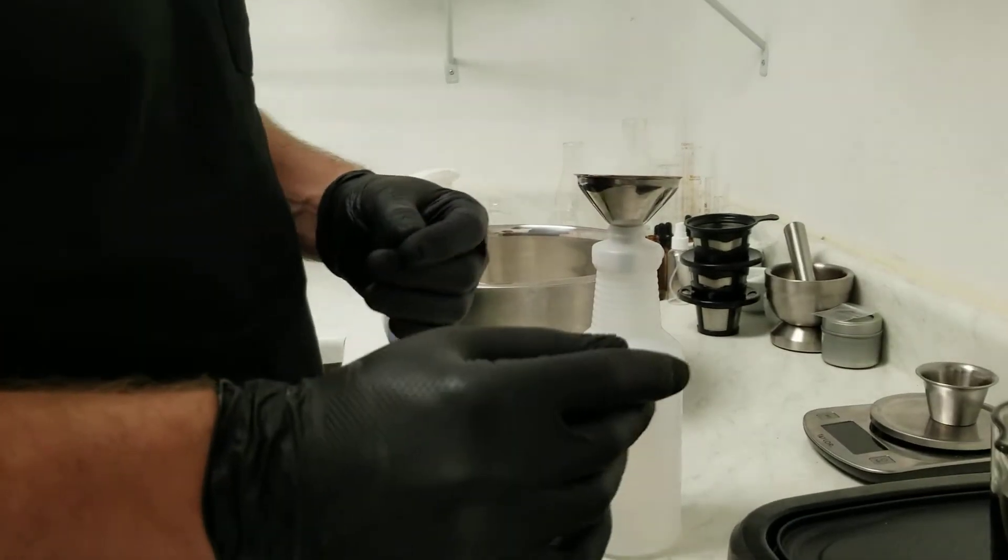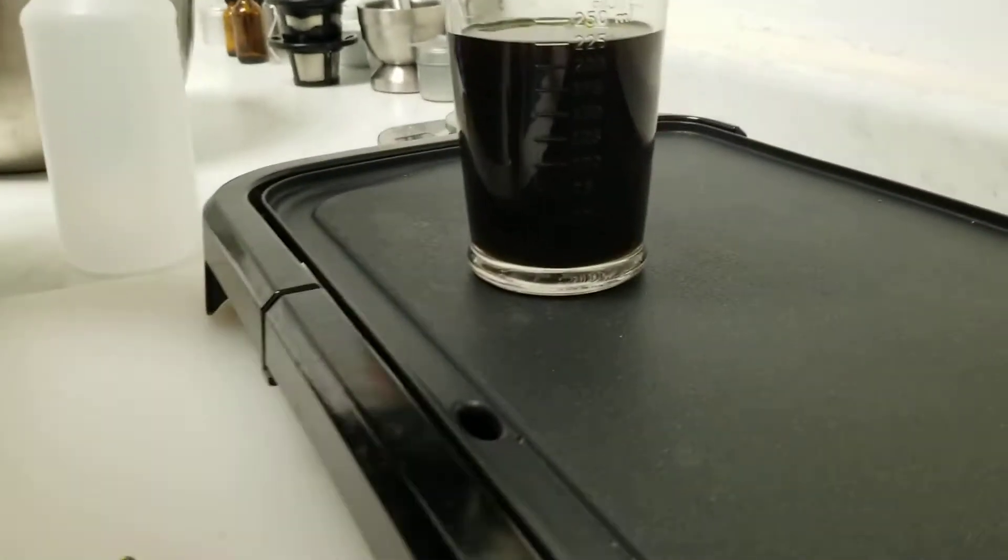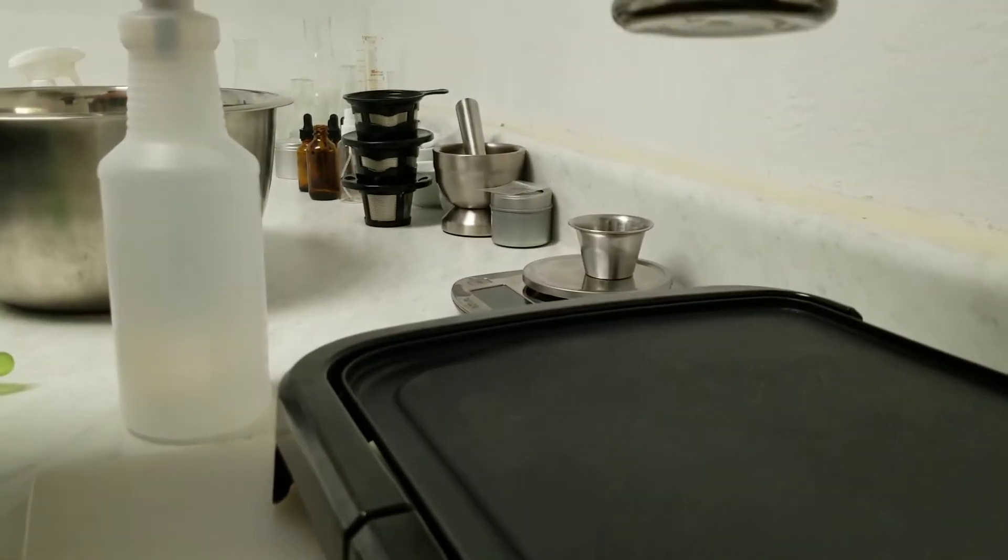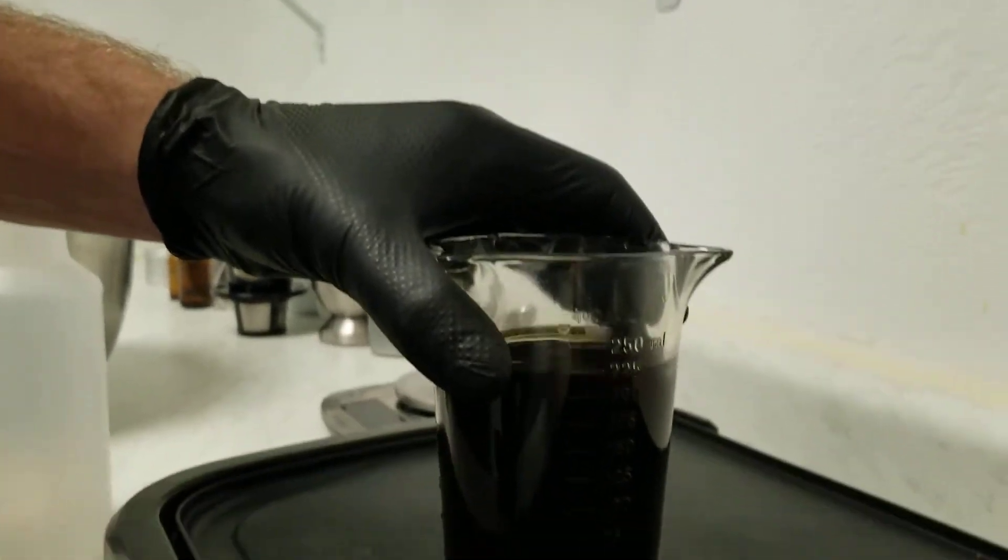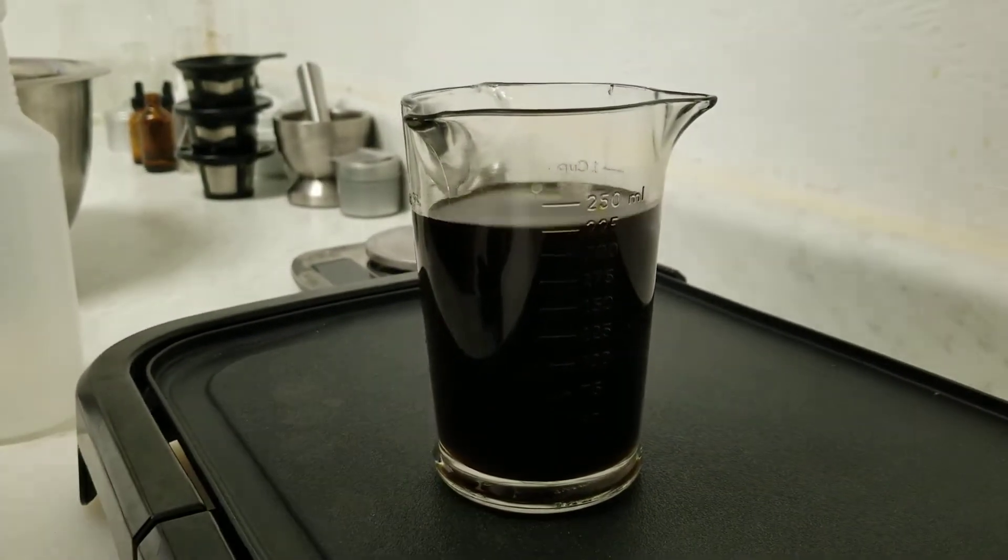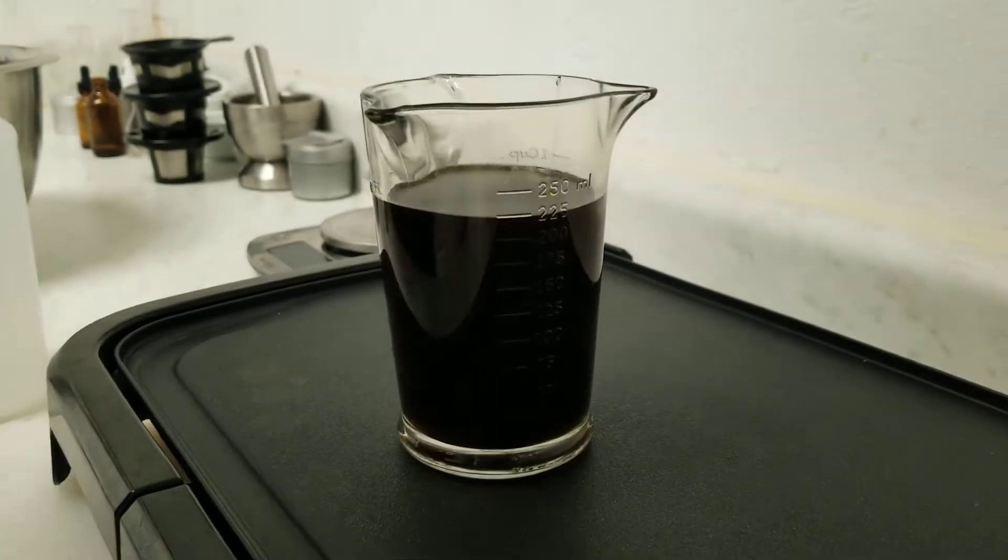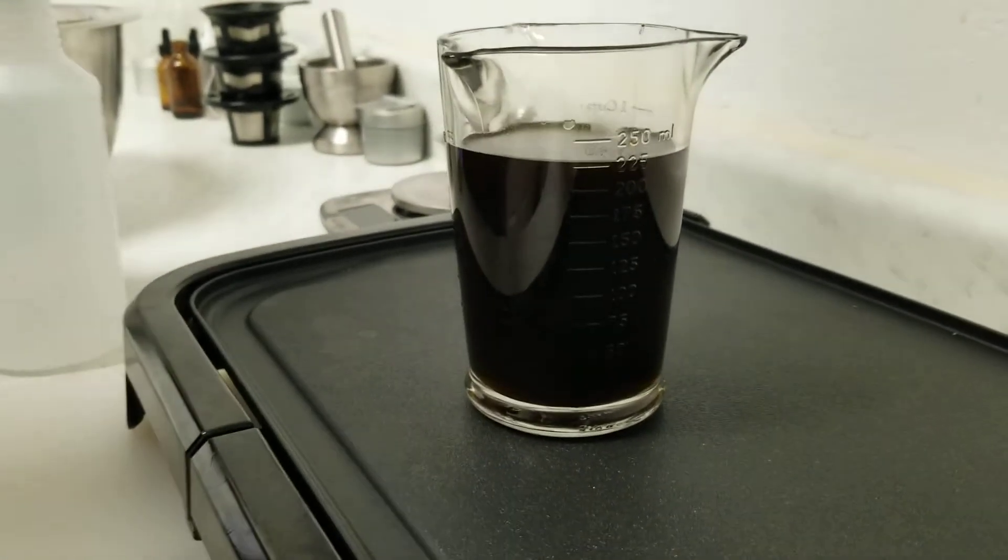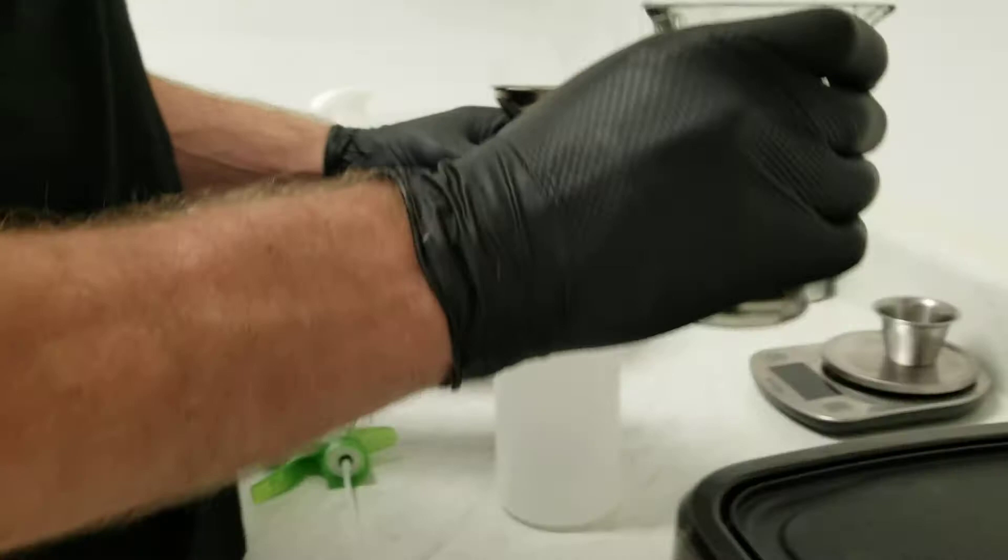All right, so after about 20 minutes of heating and vigorous stirring, we have turned this nice clear alcohol into a lovely dark brown mixture that is just THC and alcohol. And what we're going to do is pour it into this here spray bottle.